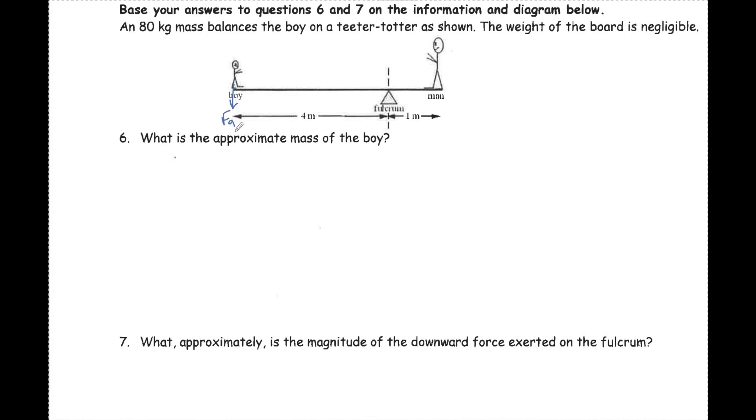This boy has some weight that creates torque and this man has some weight that creates torque, separated around a focal point. The torque of the boy equals the torque of the man. Fg of the boy times R equals Fg of the man times R. The boy is at 4 meters, the man is at 1 meter. M times 10 times 4 equals 80 times 10, so M equals 20 kilograms.